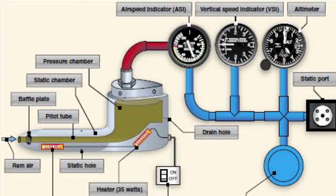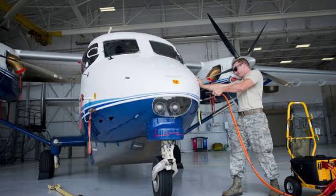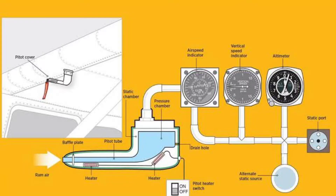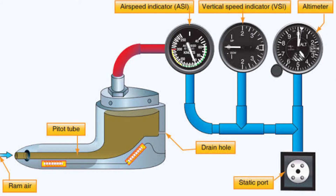Many Pitot static tube heads contain heating elements to prevent icing during flight. The pilot can send electric current to the element with a switch in the cockpit when ice-forming conditions exist. Caution should be exercised when near the Pitot tube, as these heating elements make the tube too hot to touch without receiving a burn.